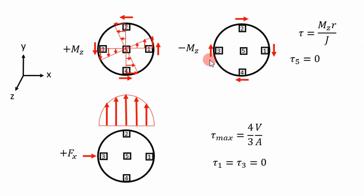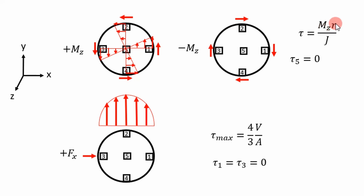In the negative direction, it would act in the clockwise direction. Our torsional stresses at elements one, two, three, and four are given by this equation, where R is the radius. If we put R equal to zero, we don't have any stress, which is the case at element five. And J is our polar moment of inertia.